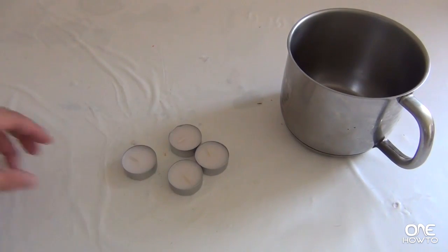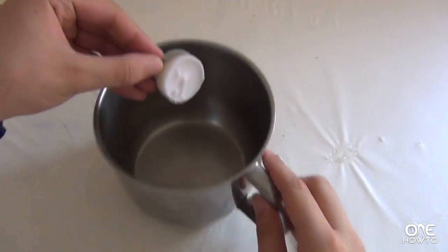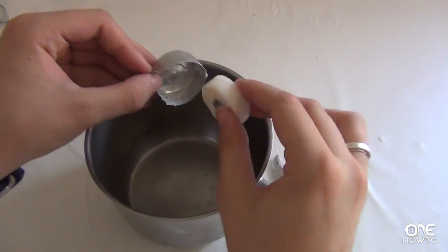First of all we're going to get the saucepan and add the candles and then the Vaseline. We'll only use the candle's wax so make sure you get rid of the rest.